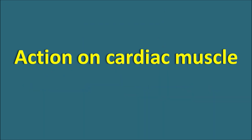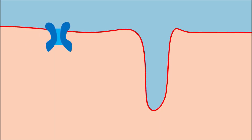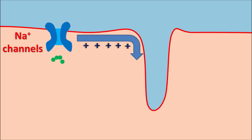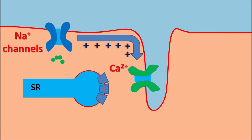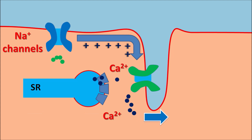Let us see the action on cardiac muscle. Within the cardiac muscle, different ion channels are present. Sodium enters through voltage-gated sodium channels, producing depolarization. The action potential is propagated into the T-tubules, activating L-type calcium channels. Calcium within the cardiac muscle is also controlled by store-operated calcium channels on the sarcoplasmic reticulum — these are the ryanodine receptors. When activated, they release a large amount of calcium into the cytoplasm, increasing intracellular calcium levels and resulting in contraction of the cardiac muscle.